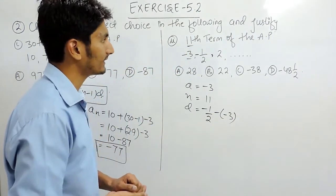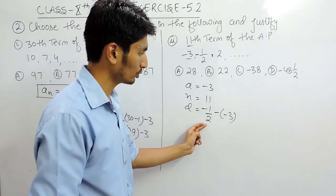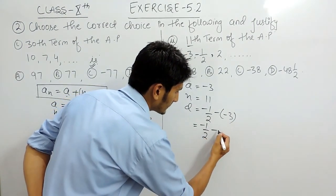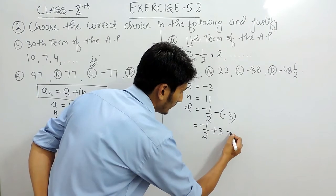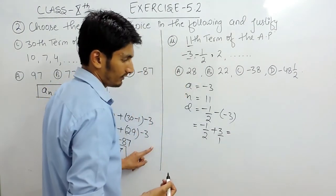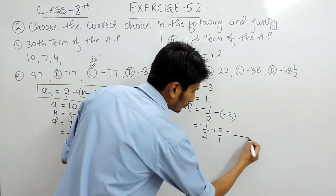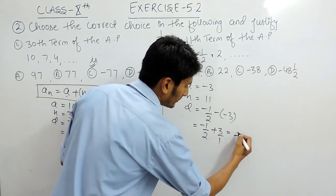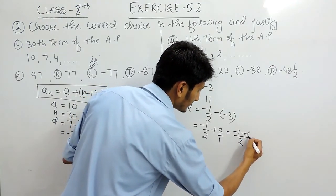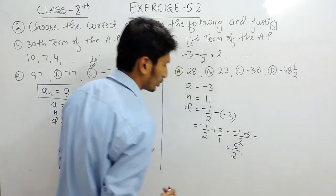We are subtracting this from this, so the answer would be -1/2 and this is +3. And if you are solving, you can take LCM as -2, and this will be -1 and +6, and the value will be 5 upon 2. So the common difference will be 5 upon 2.